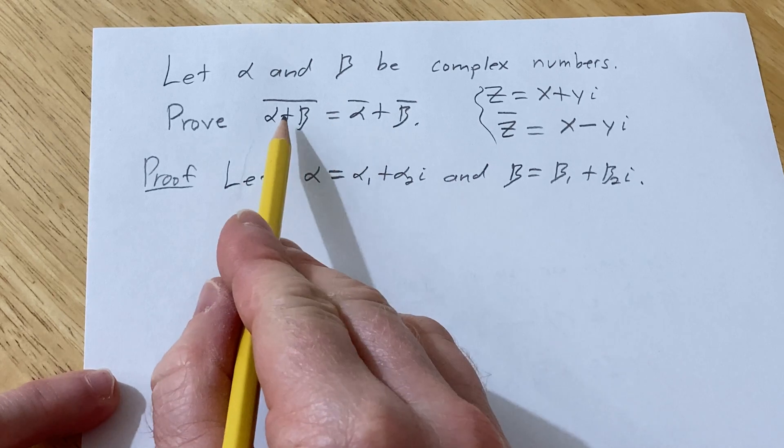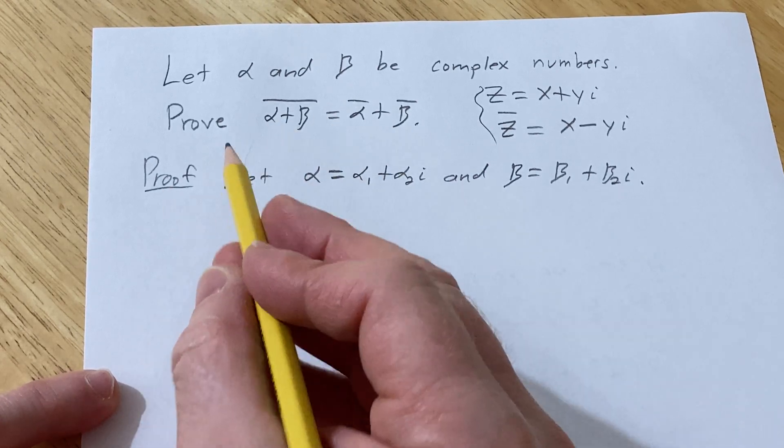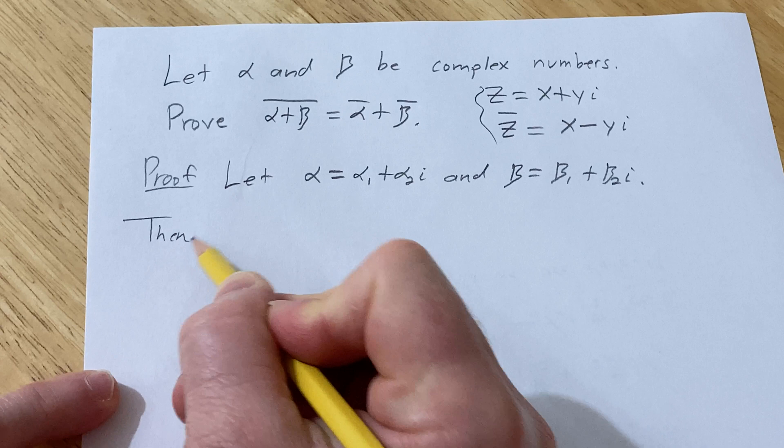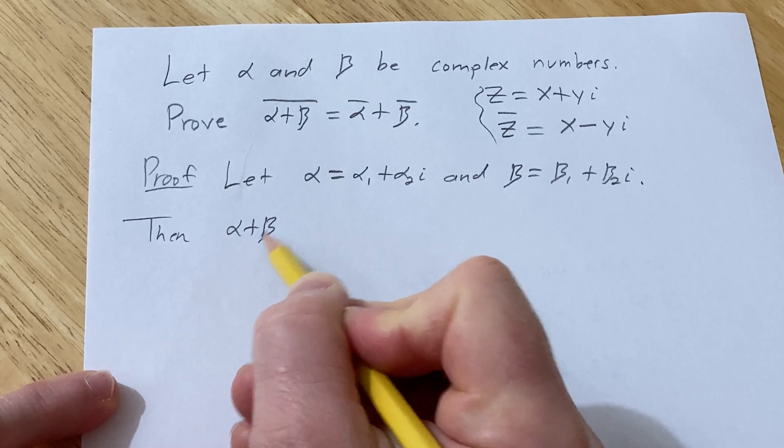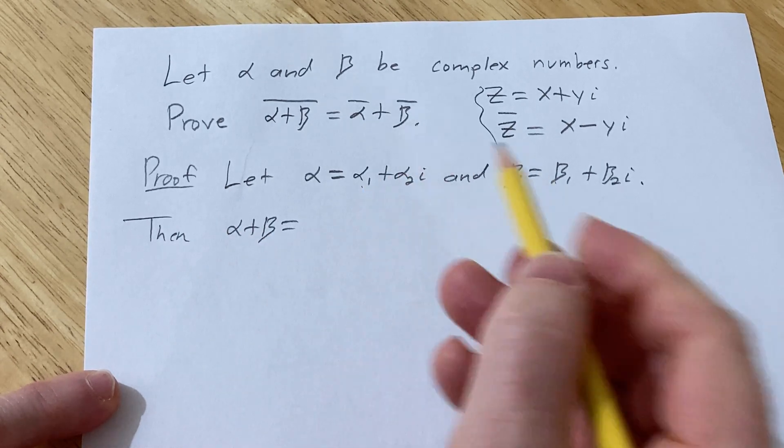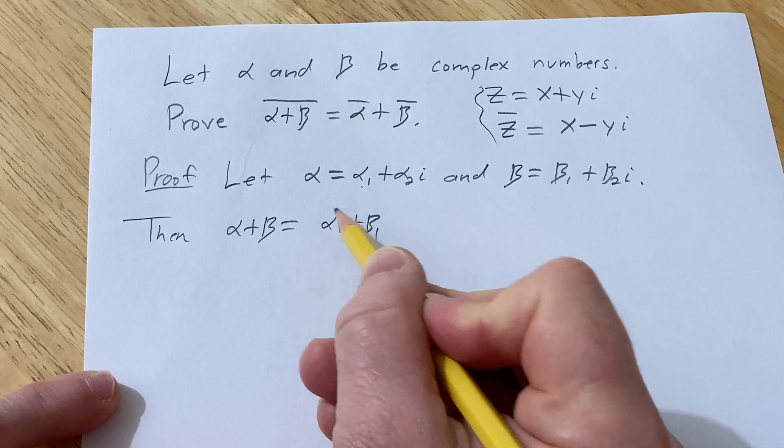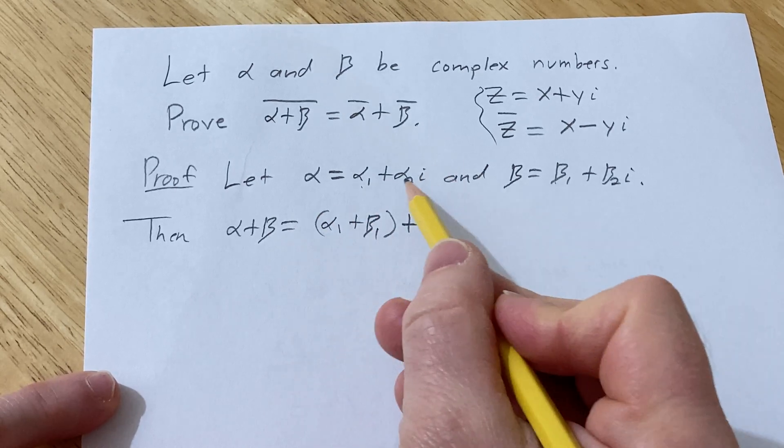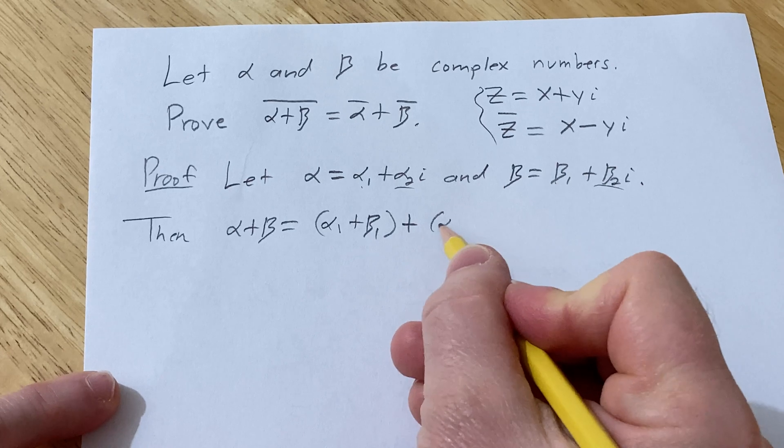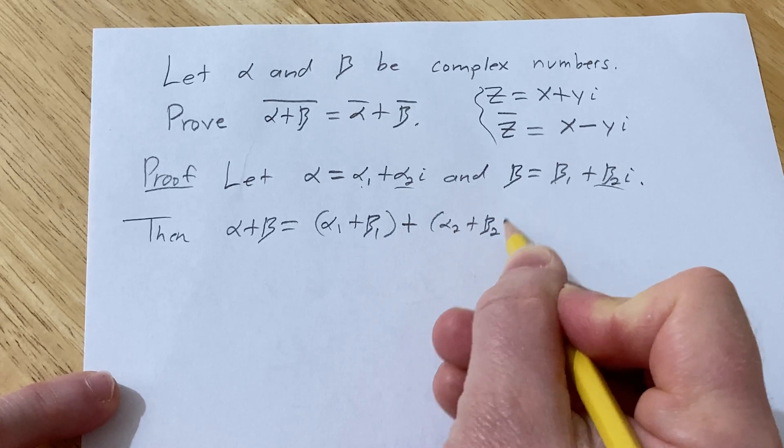And so now we just basically have to look at alpha plus beta. So then alpha plus beta, well, you simply add the real parts. So alpha sub 1 plus beta sub 1 plus, and then you add the imaginary parts. So alpha sub 2 plus beta sub 2i.